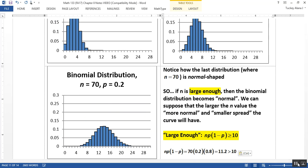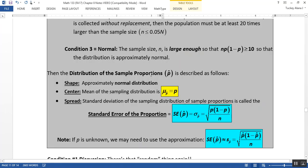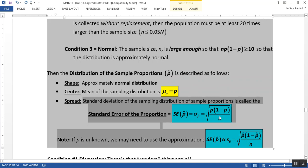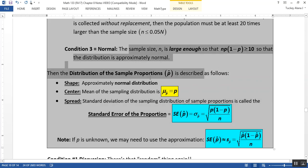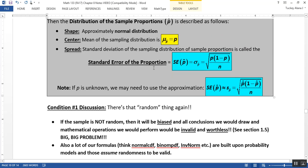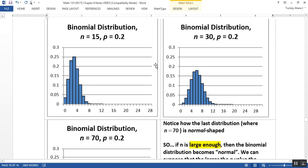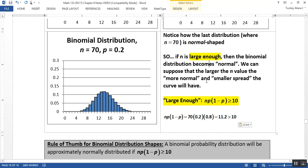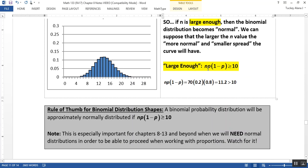We learned that in the central limit theorem. If you have n larger, that means the curve becomes normal, but it also means there is less and less spread. You can see that in the central limit theorem - in the spread portion, since n is in the denominator, the larger your n value, the less spread you'll have, but it will definitely be normal. The larger your n is, the more normal the shape is going to be.